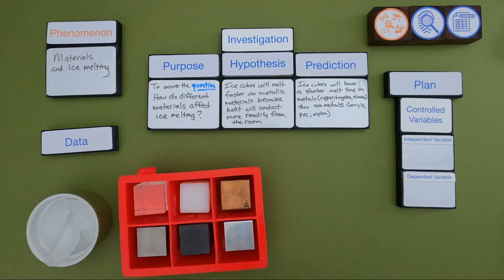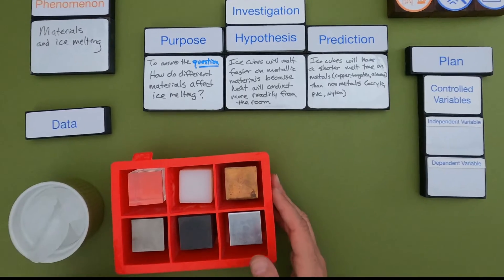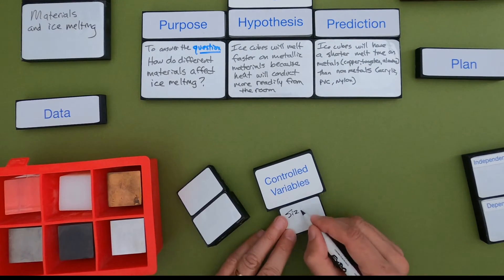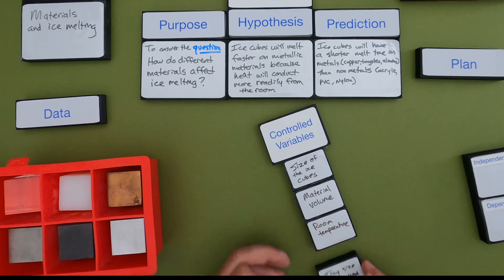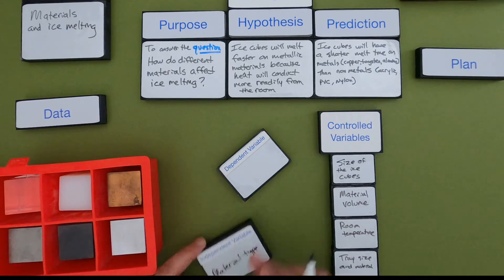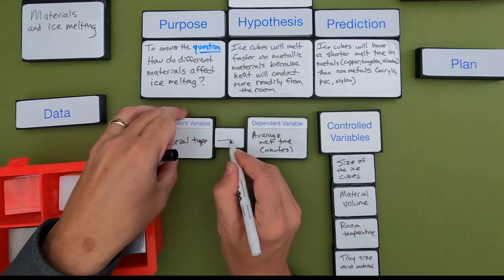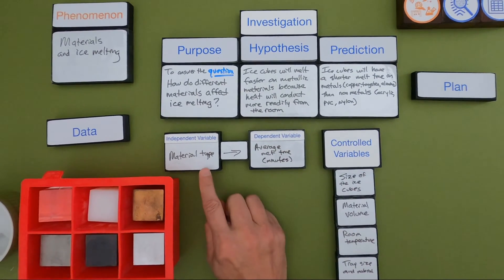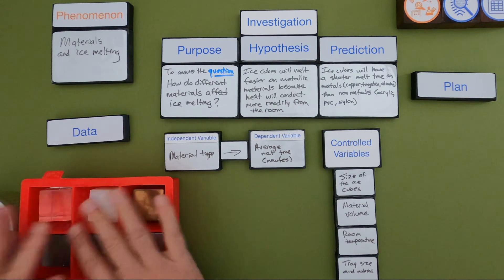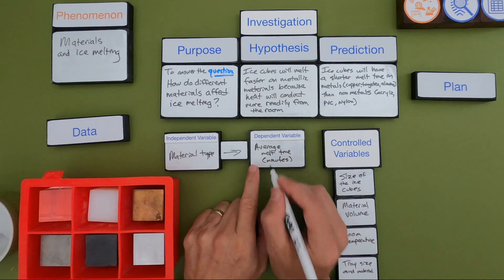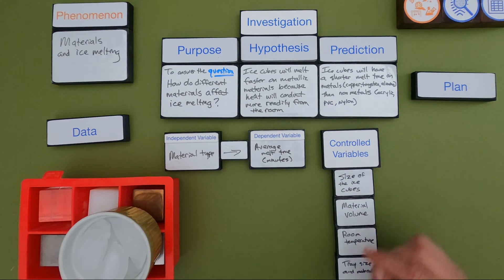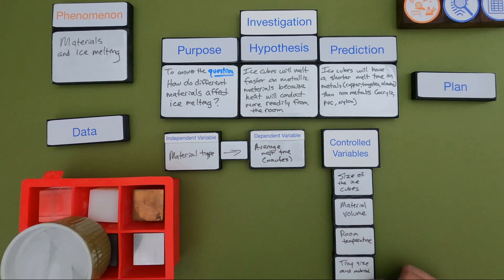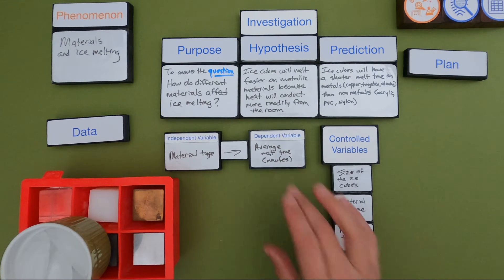Next I have to come up with my controlled variables and my independent and dependent variable. My independent variable is the material type — I'm going to change that and run all the trials at once. My dependent variable is the average melt time in minutes. What do I want to control? The size of the ice cubes, so those are all uniform; the material volume, how much volume in each cube; the room temperature; and the tray size and materials — those are the things I'm going to try to keep constant.